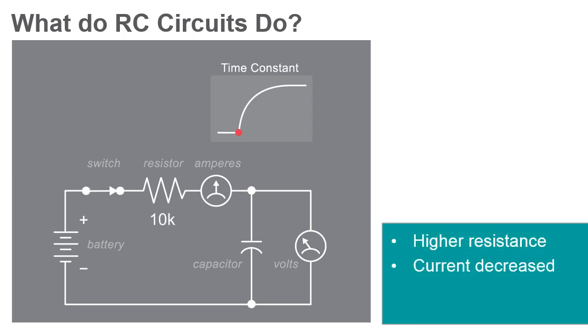With a higher resistance, the current in the circuit is decreased, and the capacitor charges more slowly.